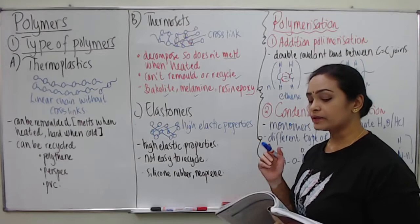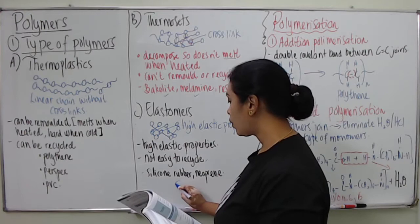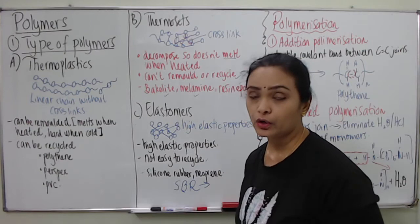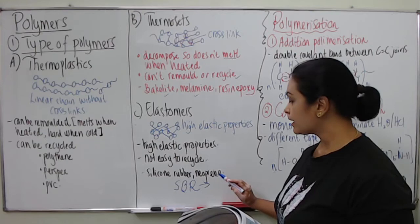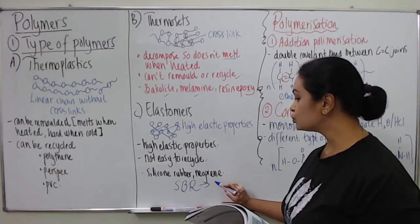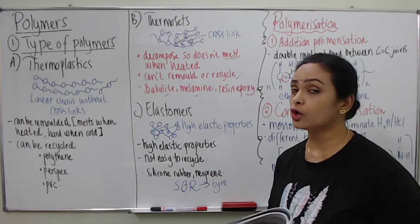There is another example of elastomer called SBR. SBR stands for Styrene-Butadiene Rubber. This is usually used to make tires because of its elasticity.